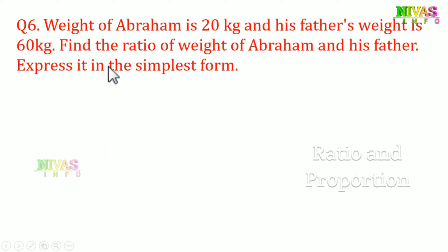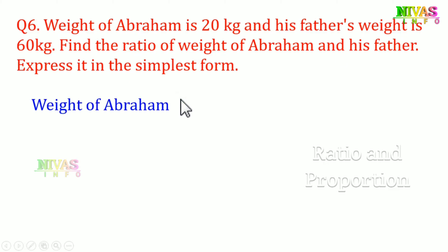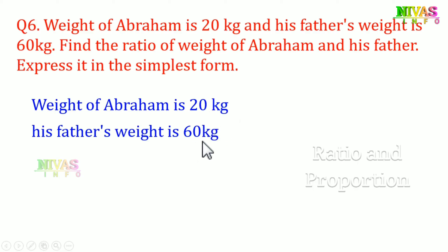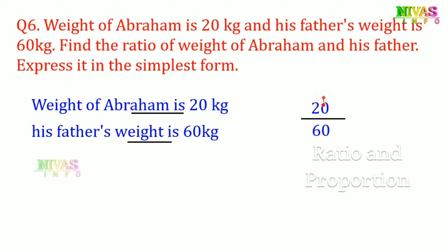Question 6: the weight of Abraham is 20 kg and his father's weight is 60 kg. Find the ratio in simplest form. Writing 20 by 60, dividing by 20 gives 1 by 3. The simplest form ratio is 1 is to 3.